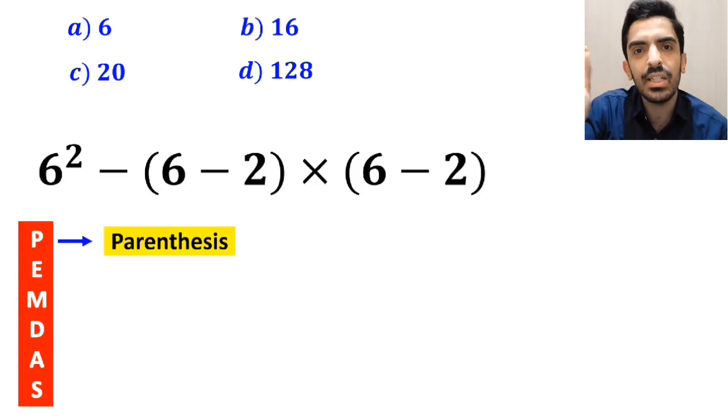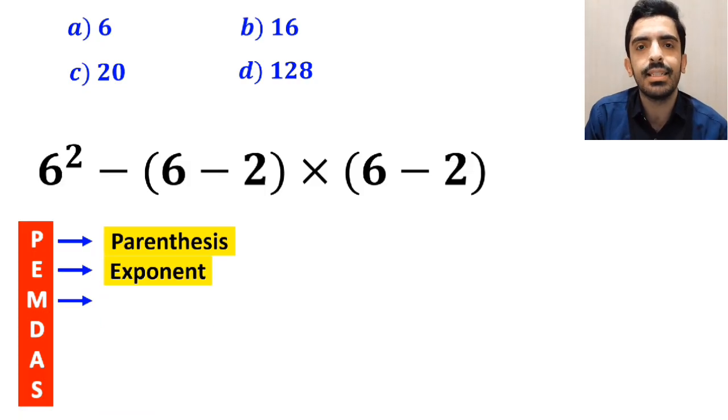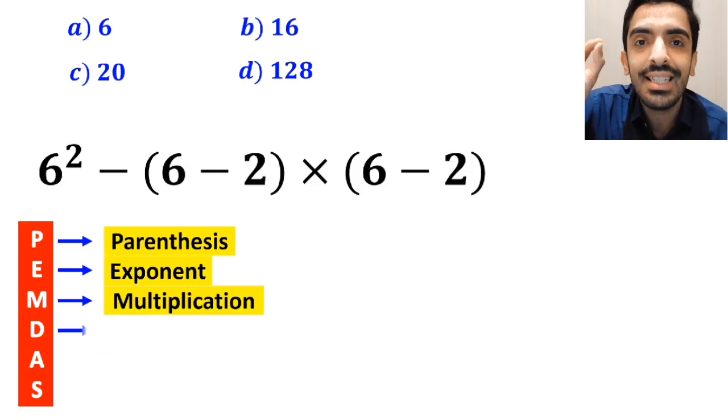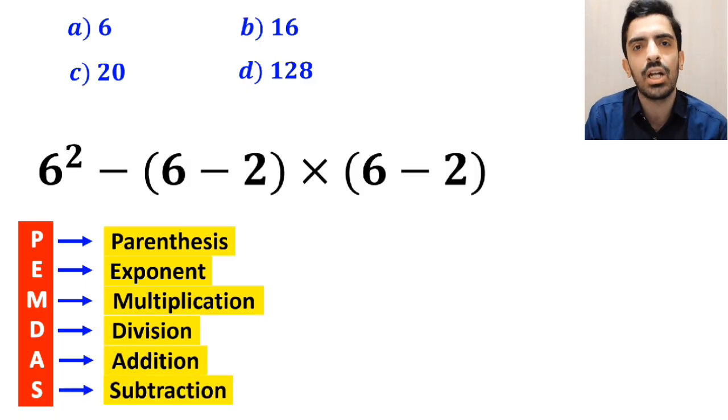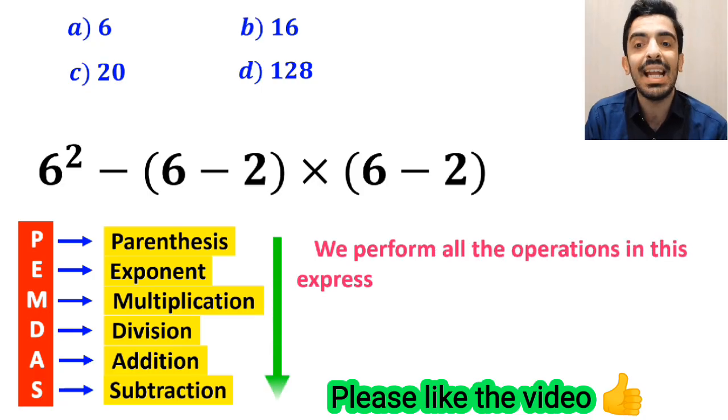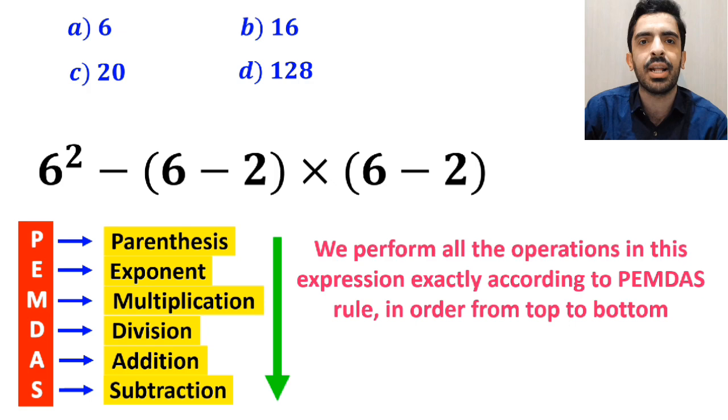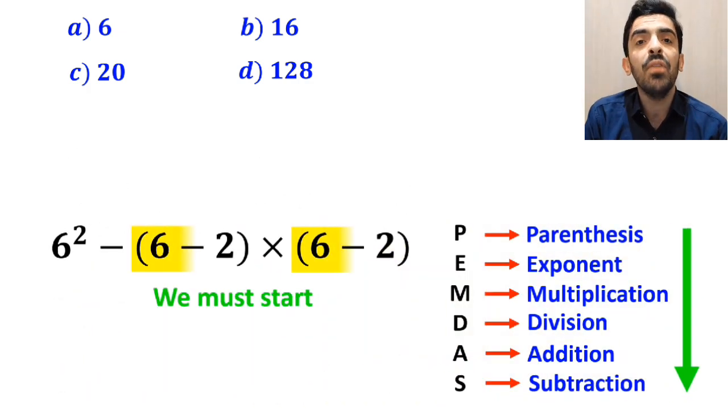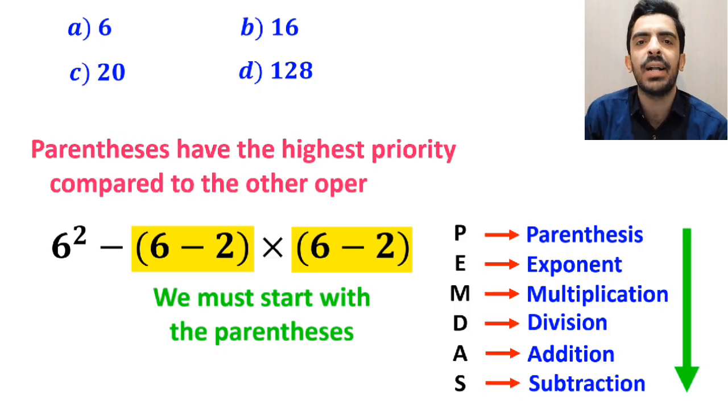In this rule P stands for parenthesis, E stands for exponent, M stands for multiplication, D stands for division, A stands for addition and S stands for subtraction. We must perform all the operations in this expression exactly according to the PEMDAS rule in order from top to bottom. So, we must start with the parenthesis first because according to the PEMDAS rule parenthesis have the highest priority compared to the other operations.